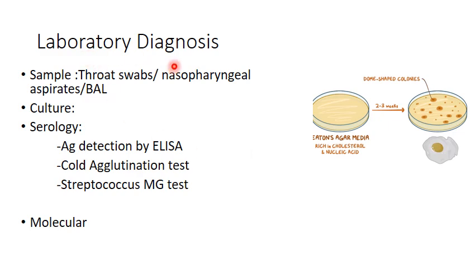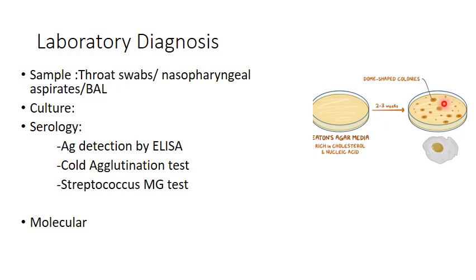For laboratory diagnosis of Mycoplasma, samples that can be collected include throat swabs, nasopharyngeal aspirates and bronchoalveolar lavage. Culture of the sample can be done on Eaton's agar media, which is rich in cholesterol and nucleic acid. After 2 to 3 weeks, colonies grown on the media are dome-shaped, embedded on the agar surface, and consist of a central opaque granular area of growth surrounded by flat translucent peripheral growth.